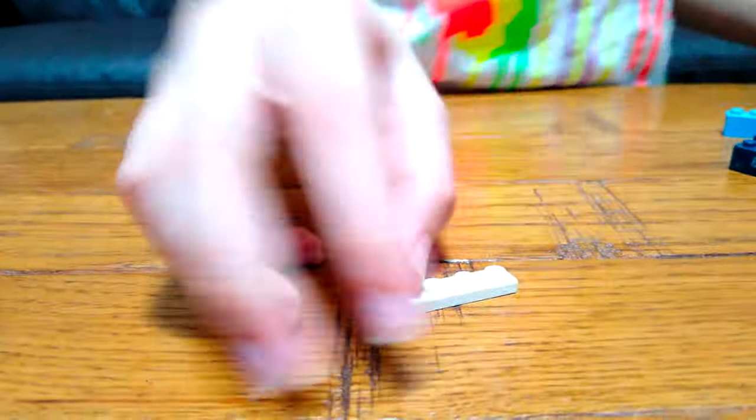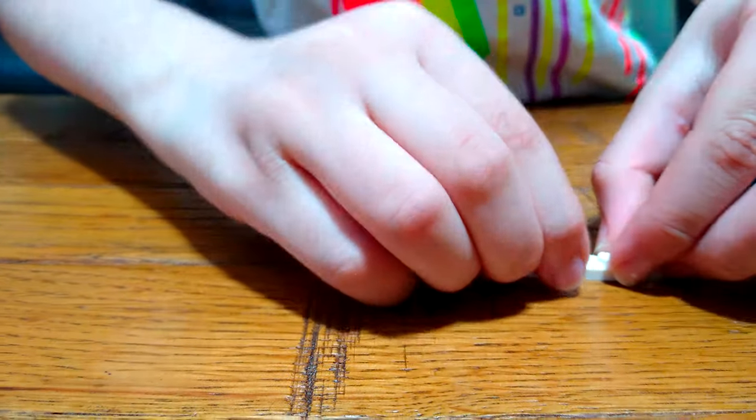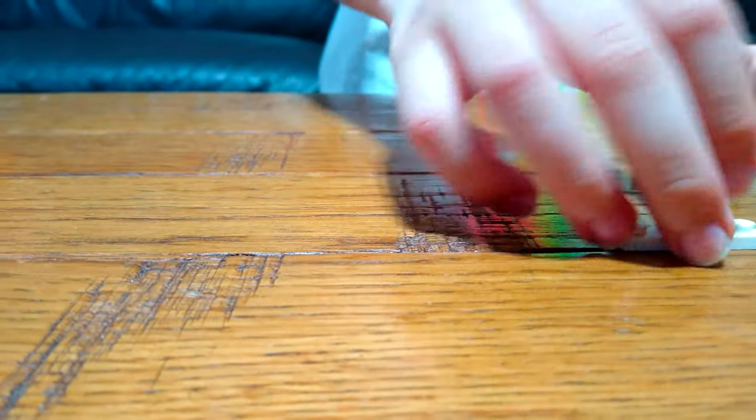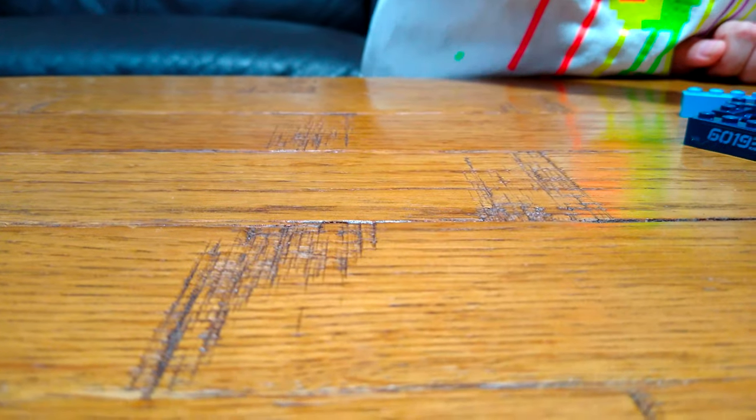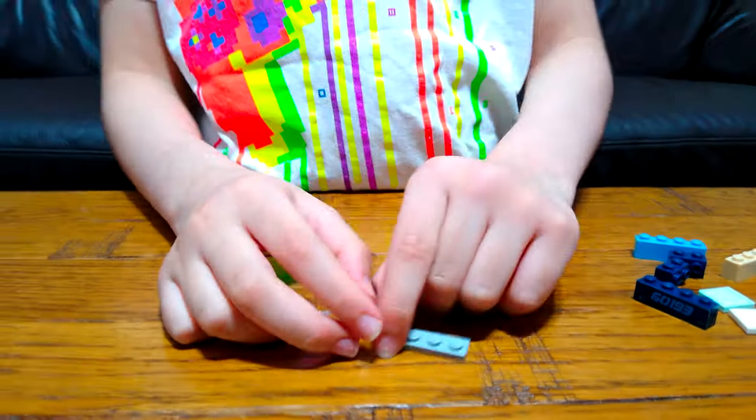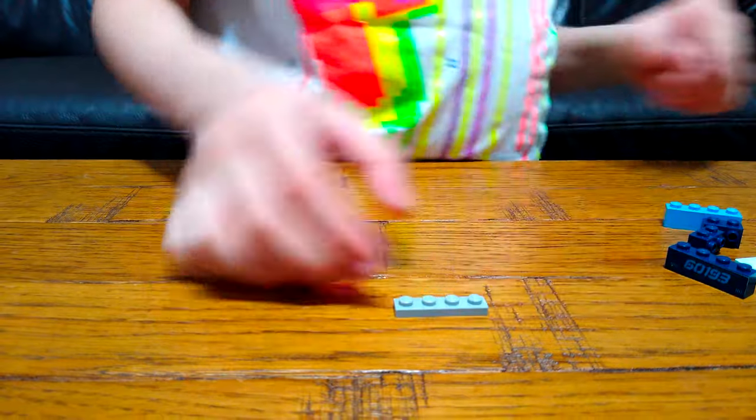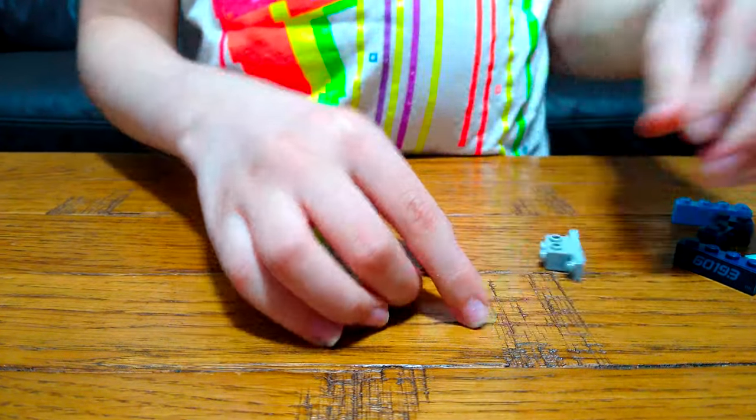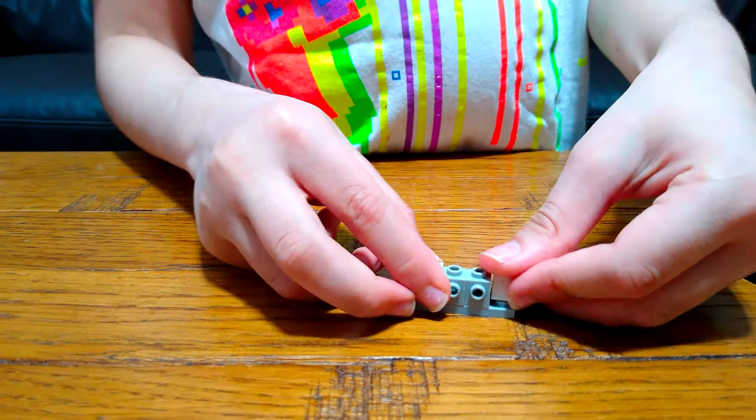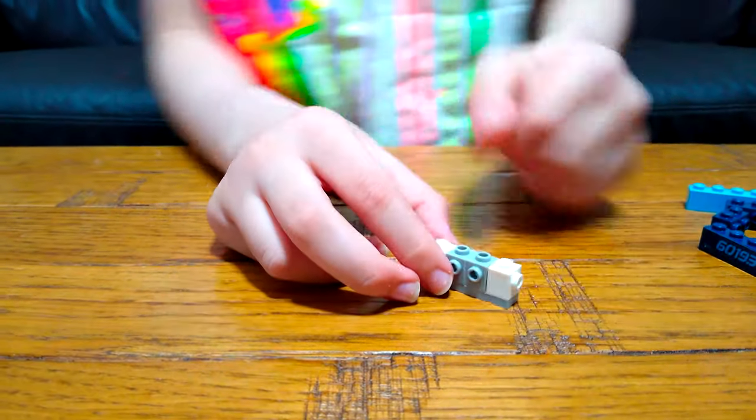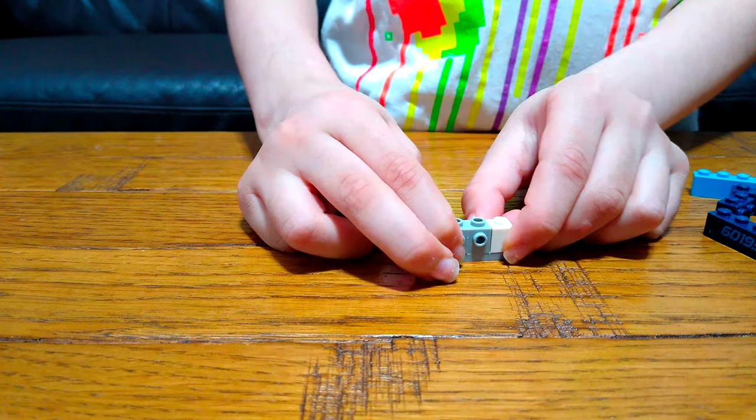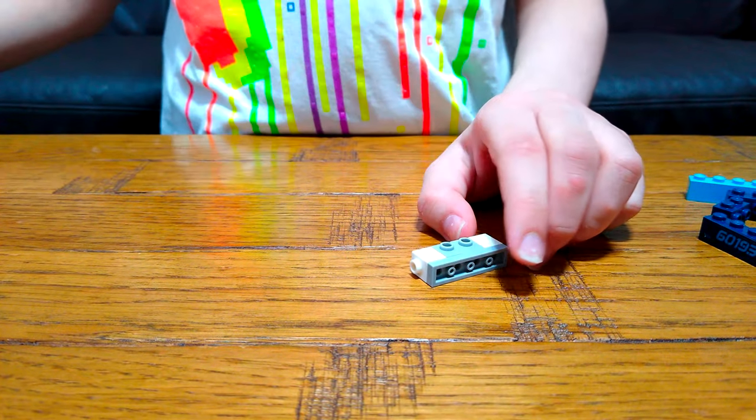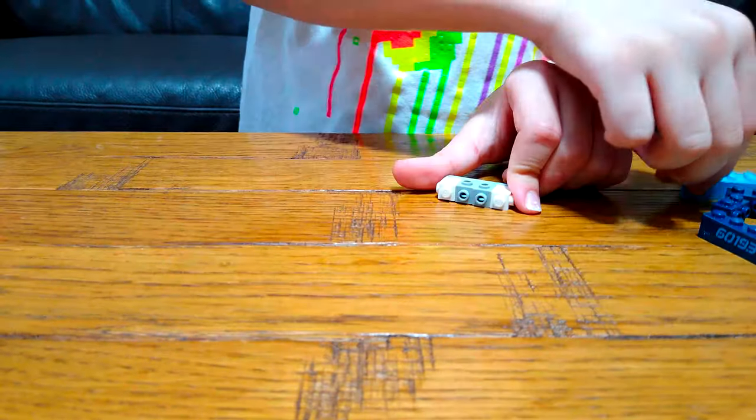First we are going to get this, put two of these. Wait, wait, wait. So we're going to get these two. This is technically going to be the start of our Murphy bed.